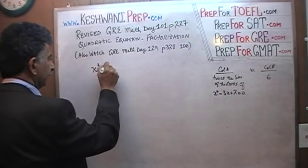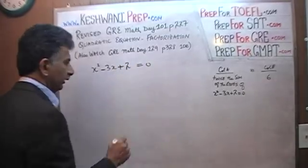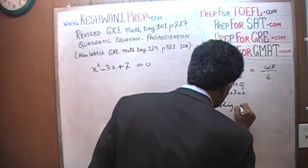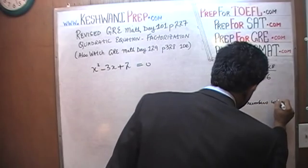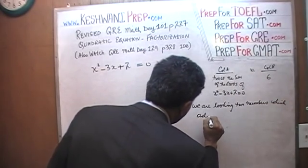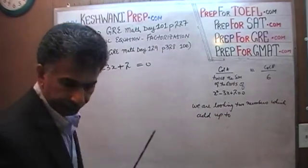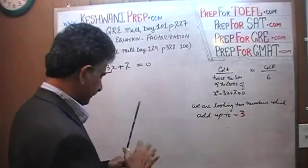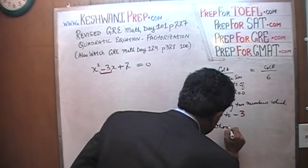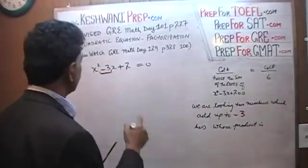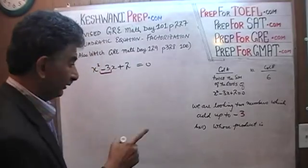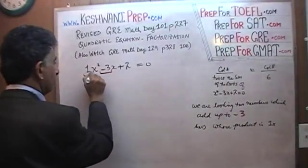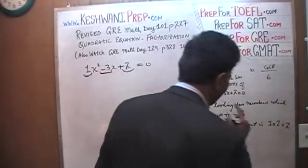Here's the equation: x² − 3x + 2 = 0. We're looking for two numbers that add up to −3, and whose product is 2 — technically 1 times 2, which is just 2. This is the tricky part — the hurdle that most people have trouble getting over.